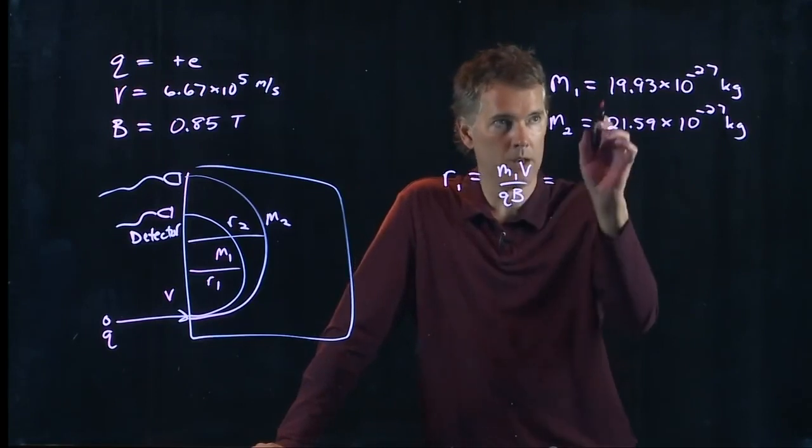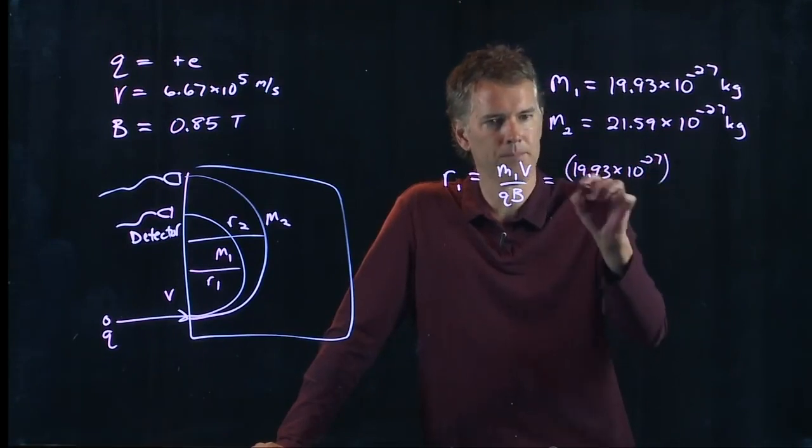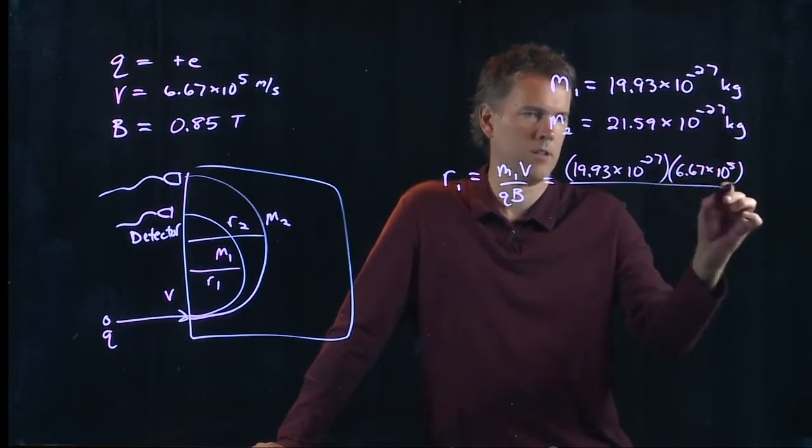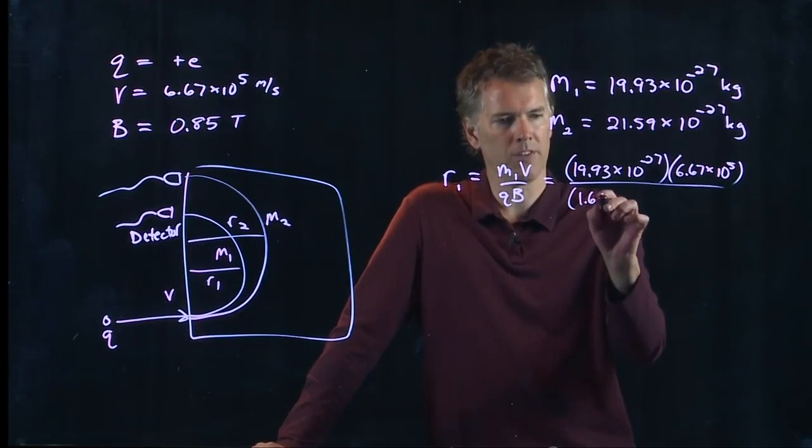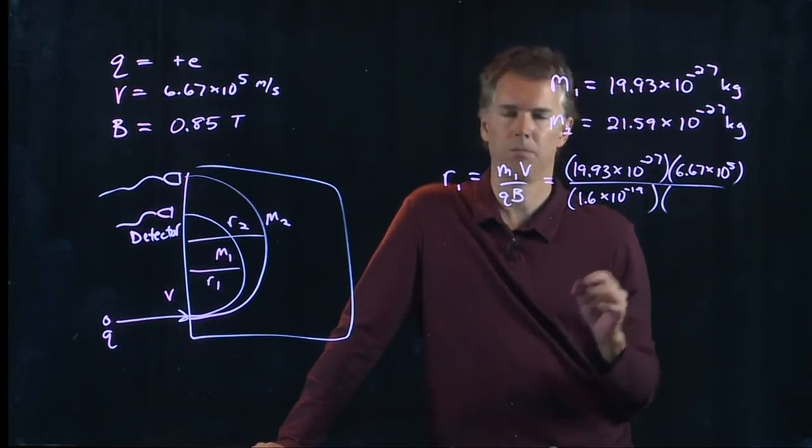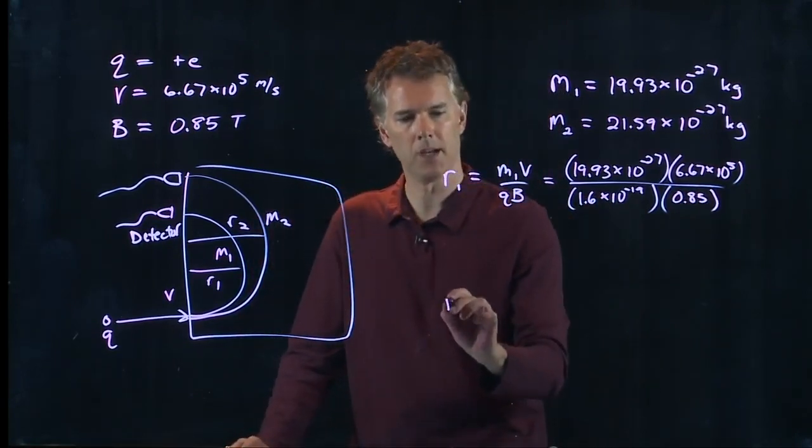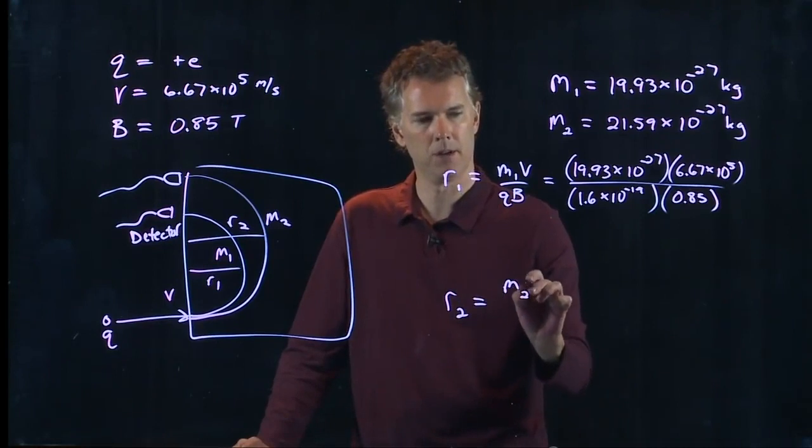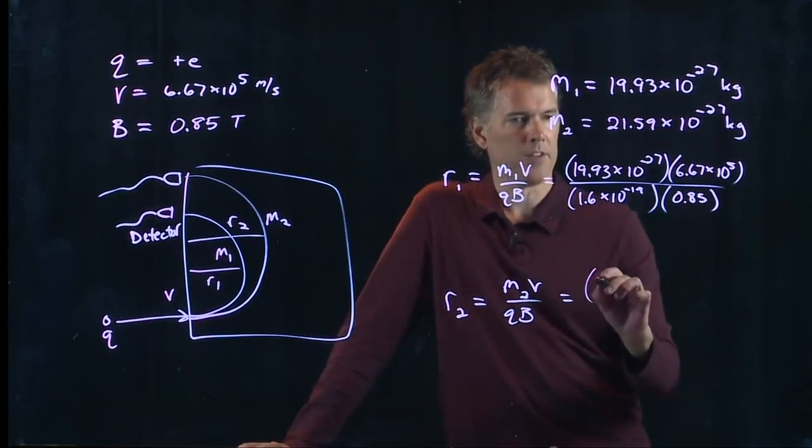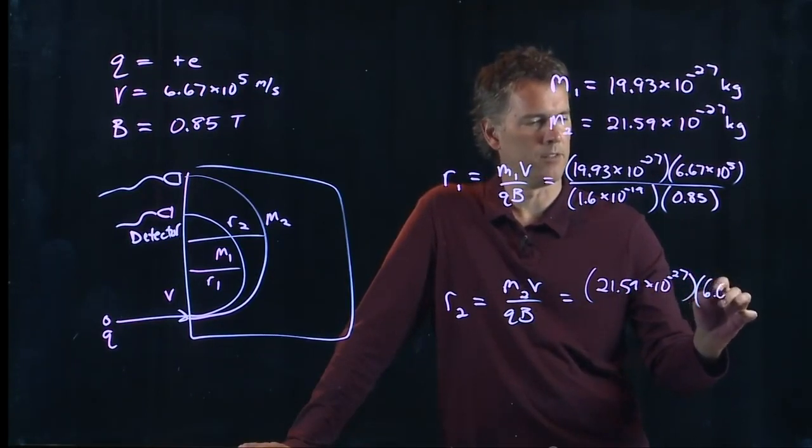So r1 we said was m1v divided by q times b, and we know all those numbers. Our m1 is 19.93, so somebody grab your calculator and punch this in. v was 6.67 times 10 to the 5, q is one electron which is 1.6 times 10 to the minus 19 coulombs, and b we said was 0.85 tesla. For r2 everything's the same except for this one, 21.59 times 10 to the minus 27.